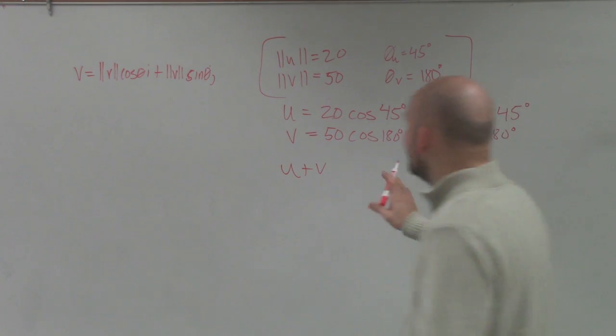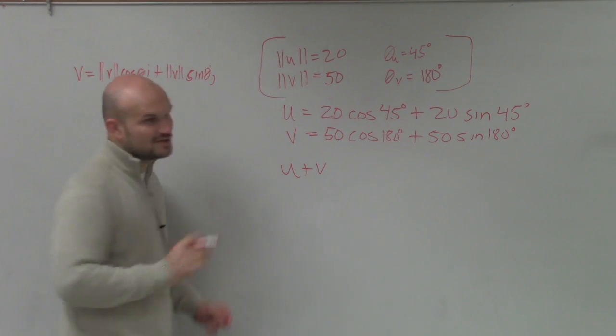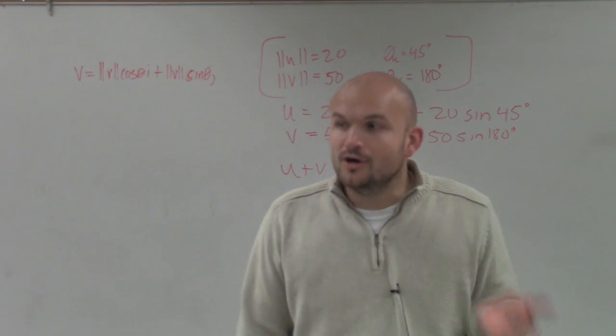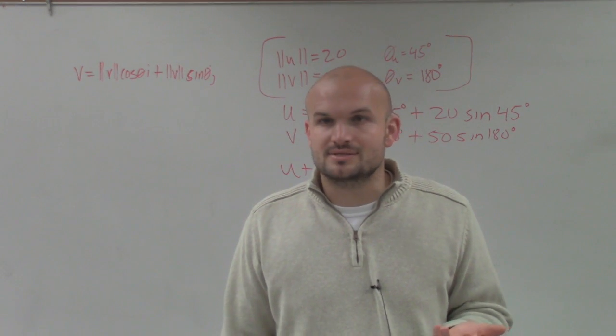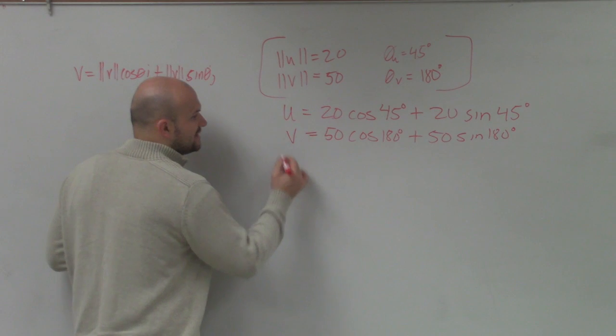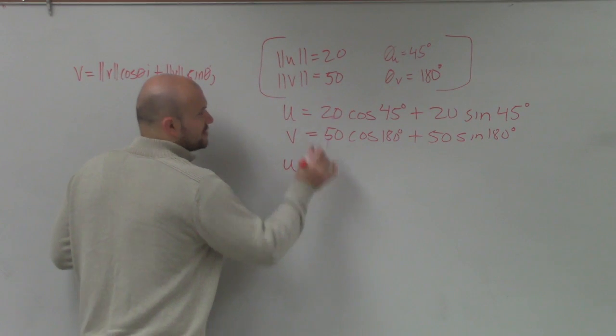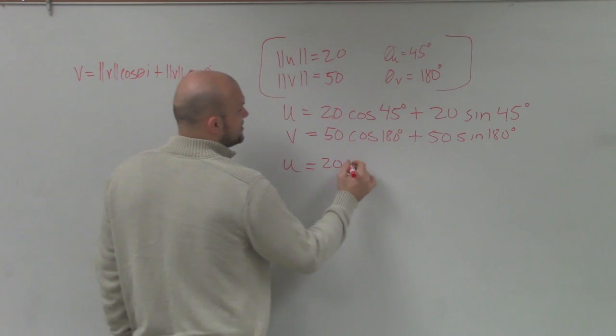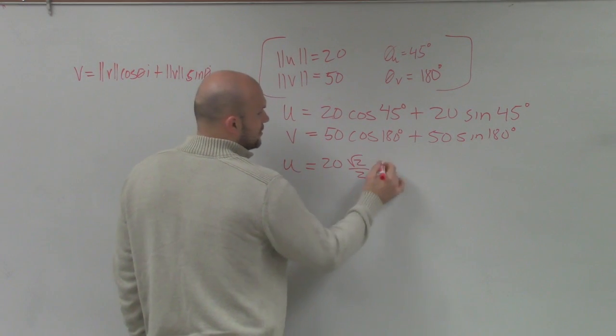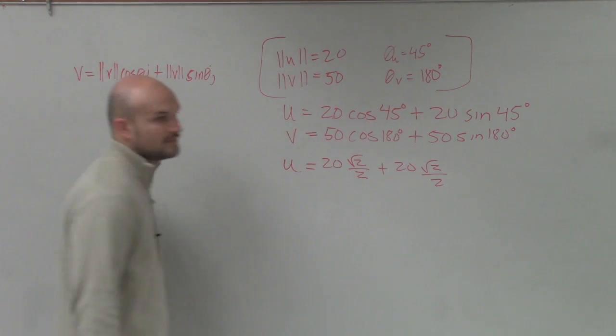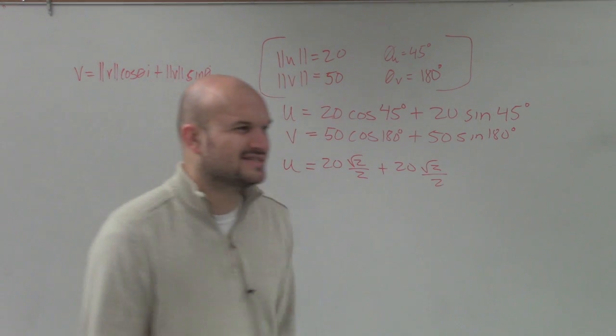But here, these are not as simple to add, right? However, thankfully for the unit circle, we can evaluate a lot of these points. So before I get to u and v, let's go and simplify these. So here, I have 20. What is the cosine of 45 degrees? That's going to be the square root of 2 over 2, plus 20 times the square root of 2 over 2, right? Because the sine of 45 degrees is the exact same.